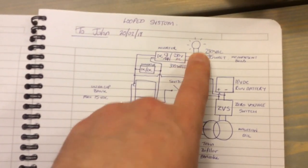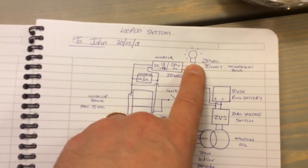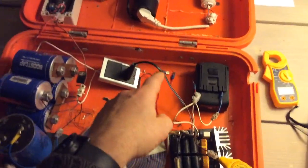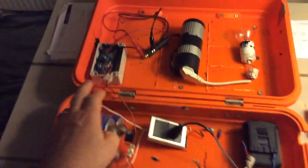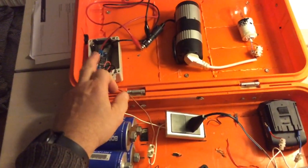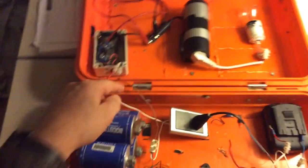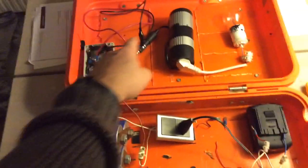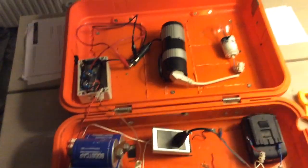That's powering an incandescent bulb. Basically, what it's going to show is I'm going to start the DC-DC converter to show what's in the capacitor bank, which will power the light. I will then start the battery to show you the system running.